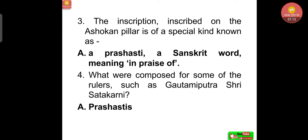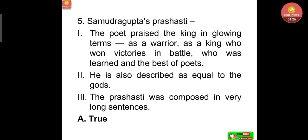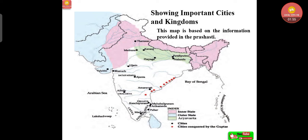The word meaning of prashasti — 'in praise of' — could also be asked. Prashastis were composed for some rulers such as Gautamiputra Shri Shatakarni. The poet praised Samudragupta in glowing terms as a warrior, as a king who won victories in battle, who was learned and the best of poets, and also described as equal to the gods. The prashasti was composed in very long sentences, and all these statements are true. Now let's see the map showing important cities and kingdoms.